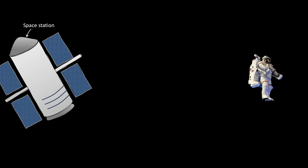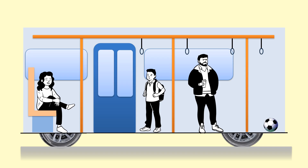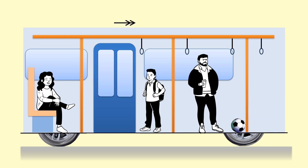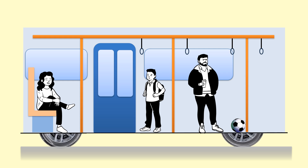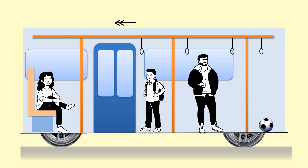Now imagine you're in a bus and there's a ball on the ground. When the bus starts accelerating, the ball rolls towards the left. But when the bus is going at a constant velocity, the ball remains stationary — even if that velocity is really high. Then when the bus decelerates, the ball rolls forward.